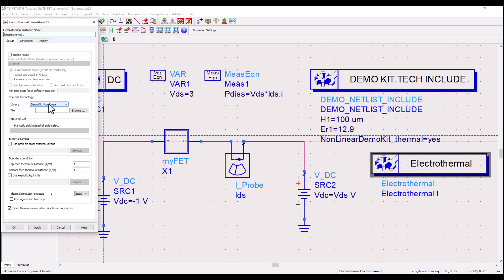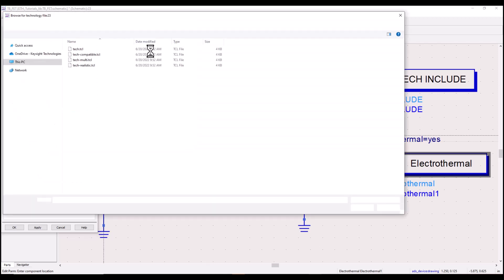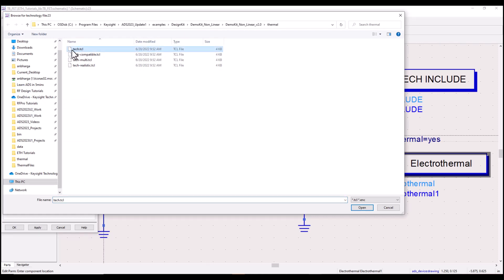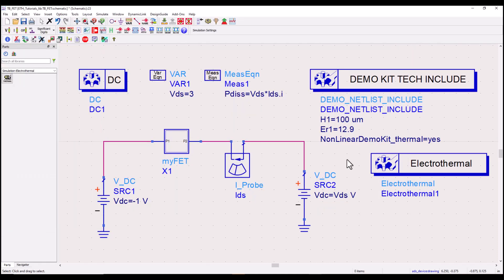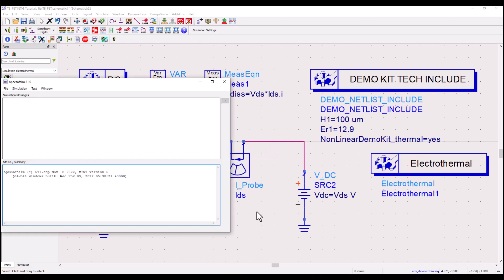And now by placing that controller on a schematic we need to assign a particular thermal technology file and in this case you can see I am using demo kit non-linear PDK. And if I browse to that folder you will find tech.tcl inside the thermal folder of this PDK. Now by attaching that to our design we have the right thermal property information available.